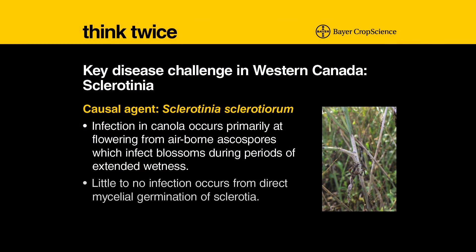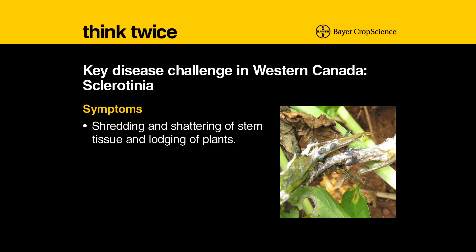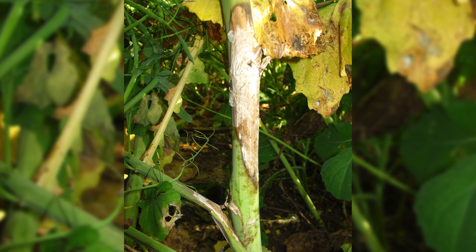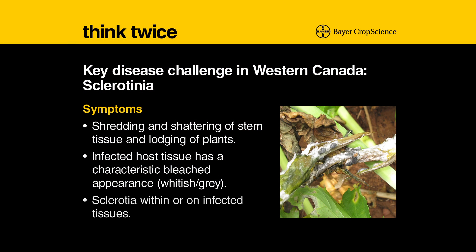We see very little infection from direct mycelial contact with the roots. The symptoms are very similar to what you'd see here. We see a shredding, a shattering of stem tissue that often can result in weakened stems and lodging. The infected host tissue has a characteristic grayish or whitish appearance. And if you were to split open the stem of an infected plant, you'd often find this little black resting body — it's called a sclerotia body or a sclerot.